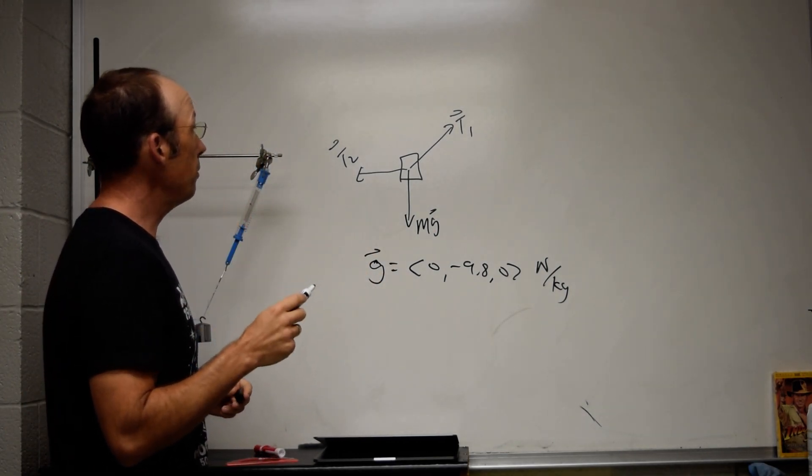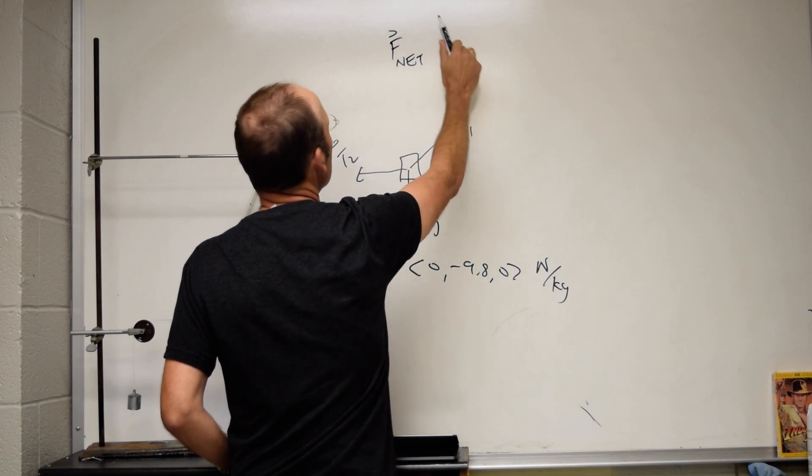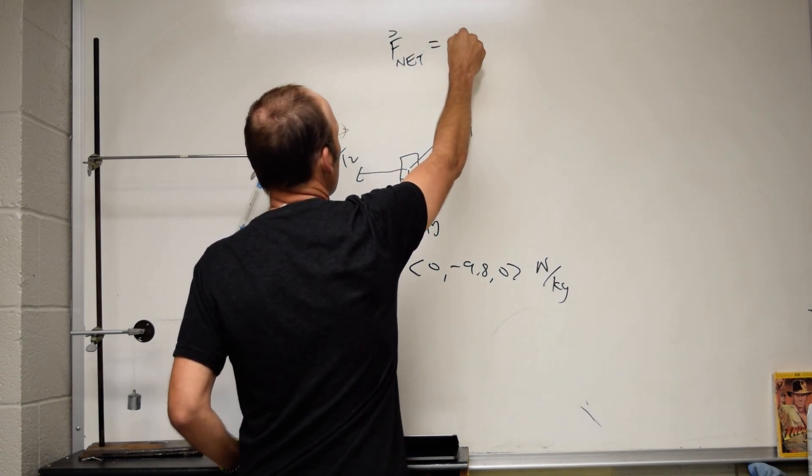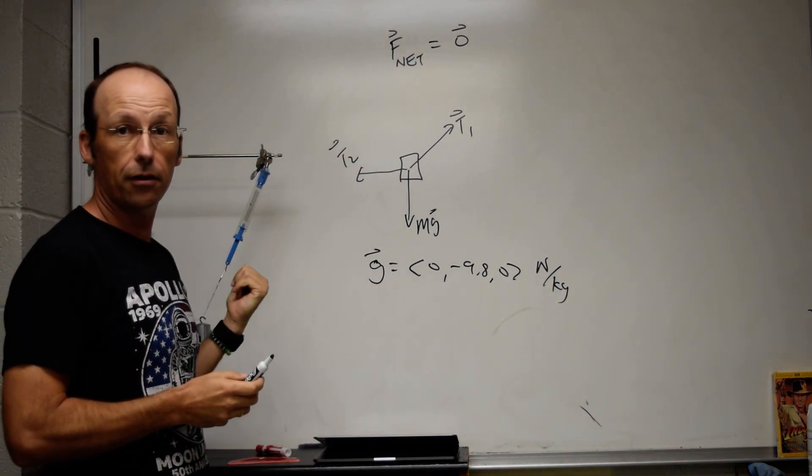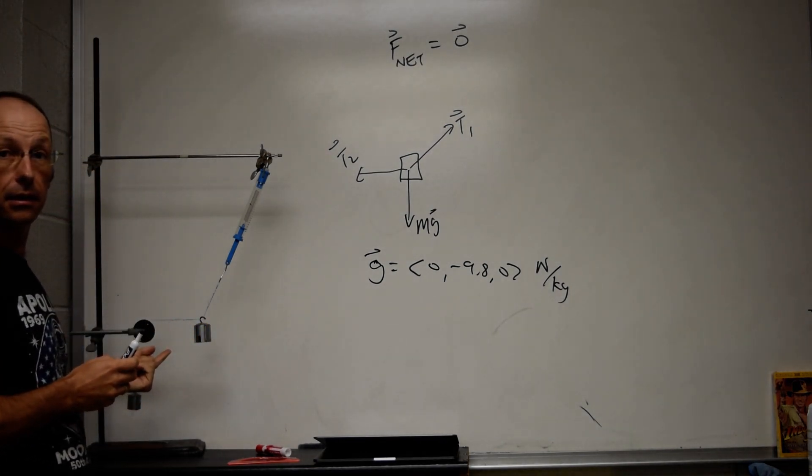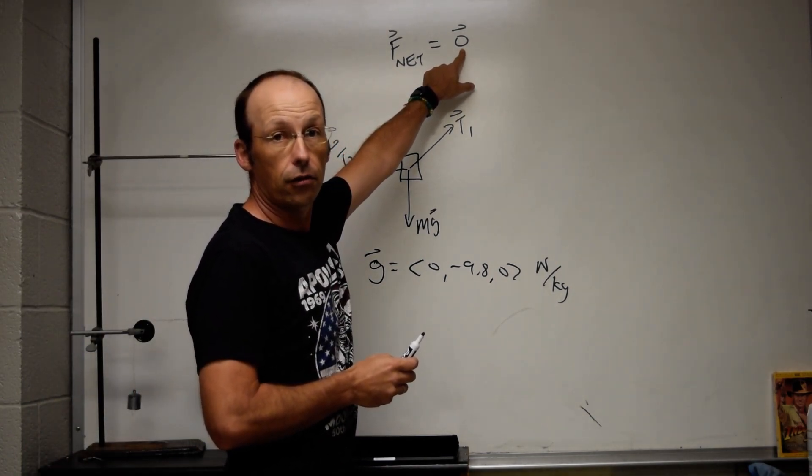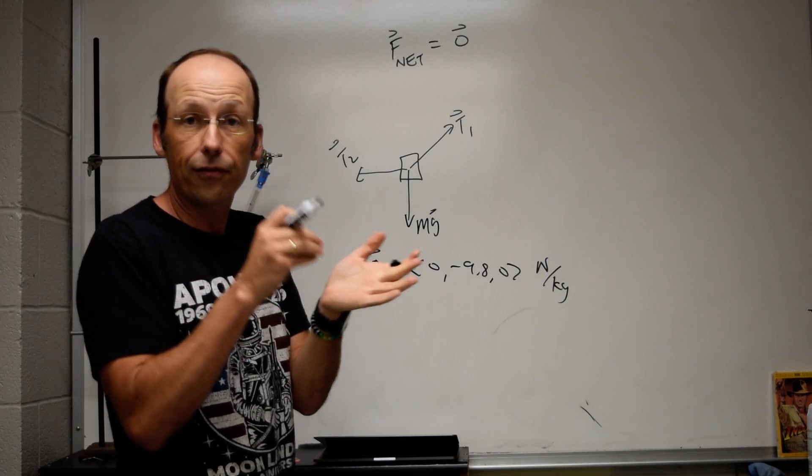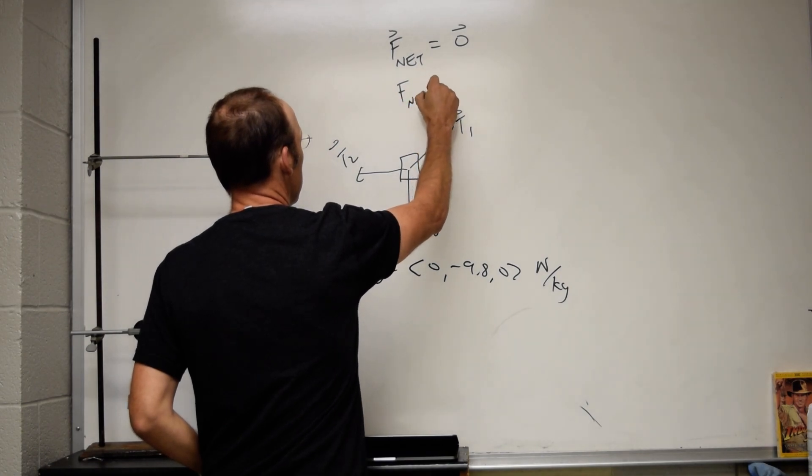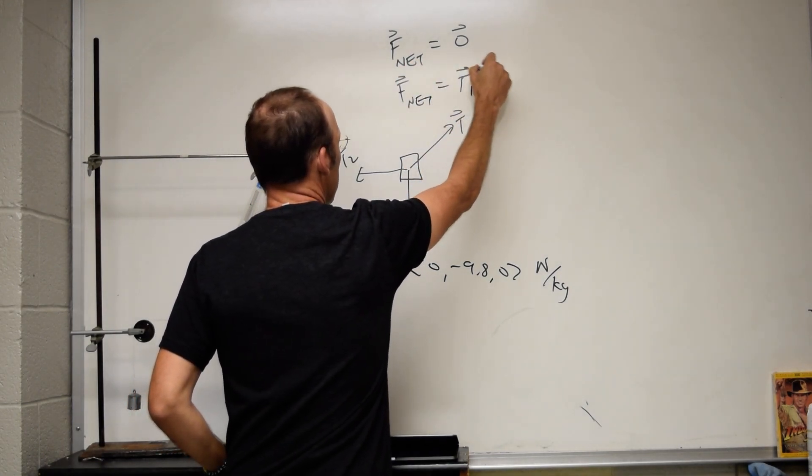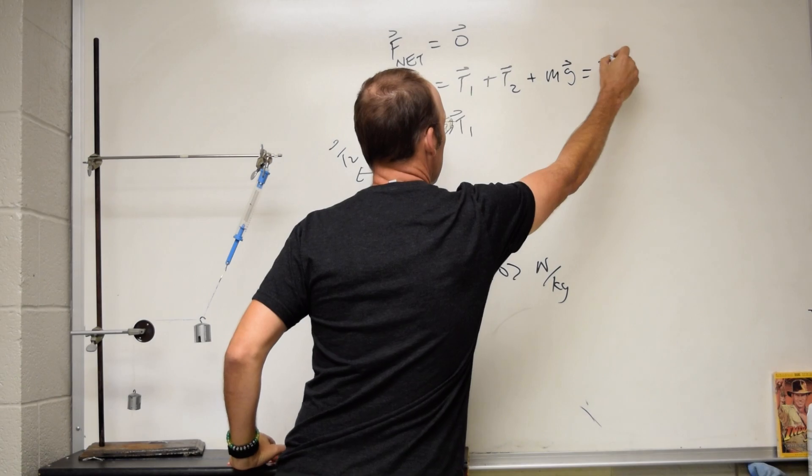Okay, so from this, I know the following. F_net is equal to 0. I know that the net force is equal to 0 because the mass is not changing momentum. The mass has 0 acceleration. And yes, this is the 0 vector. That's (0, 0, 0). So F_net is the net force. So I can add up the net forces. So here I have F_net equals T1 plus T2 plus mg equals 0.